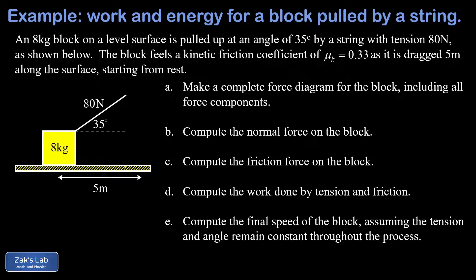In this video we're looking at a block sitting on a level surface. It's being pulled by an 80 newton force up at an angle of 35 degrees above the horizontal. This block experiences kinetic friction as we drag it along the floor for five meters. The point of this problem is that we're going to use the work and energy approach to figure out the final speed of the block. That's actually the last part of the problem and all the steps in the problem just kind of build up to that final calculation of the speed of this block after it's been dragged for five meters.